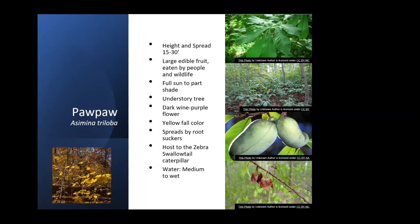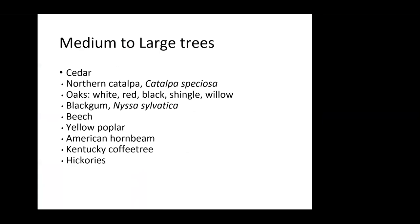We're not going to talk about big trees today, though there are so many good ones. The oaks are wonderful caterpillar hosts, and black gum is a neat one — it has berries that birds love to eat and it has great fall color.